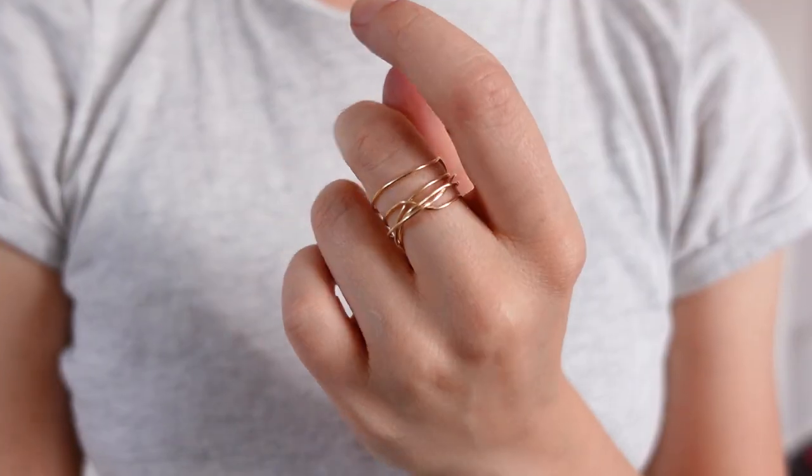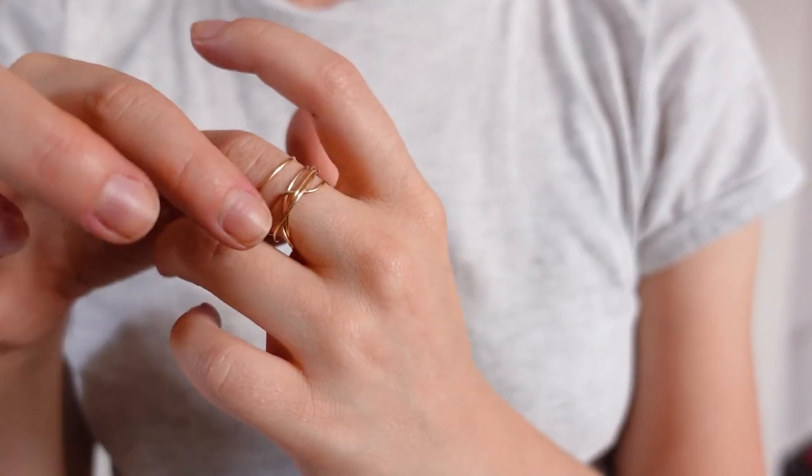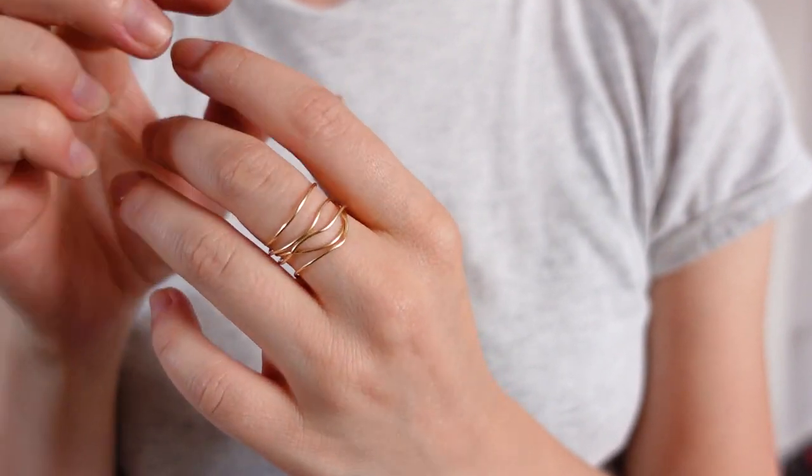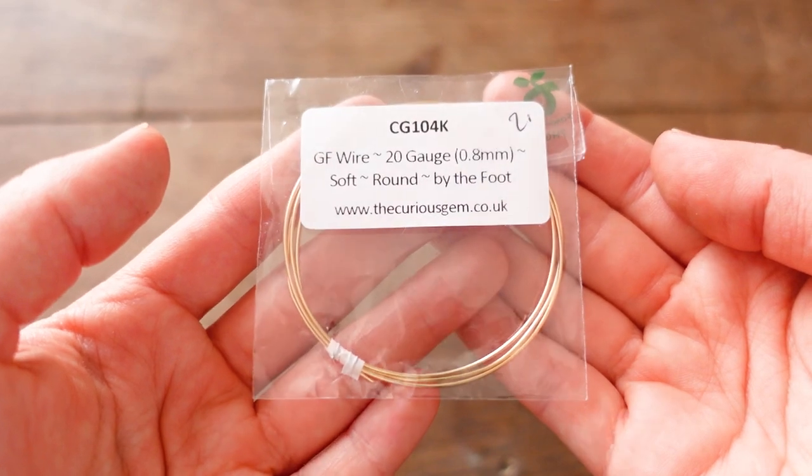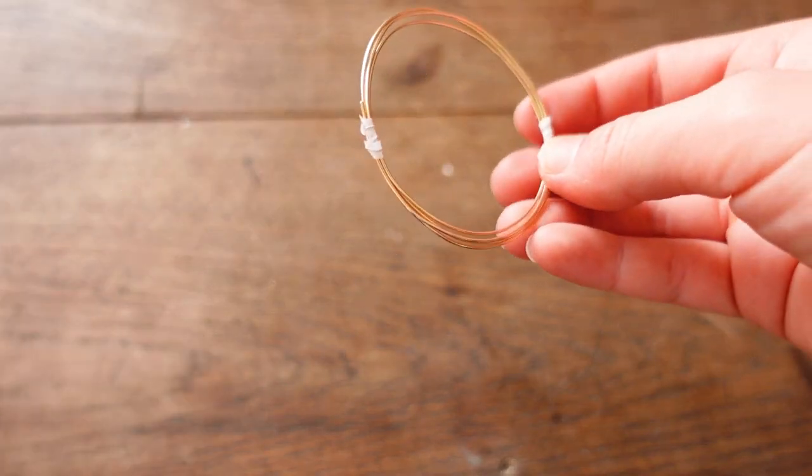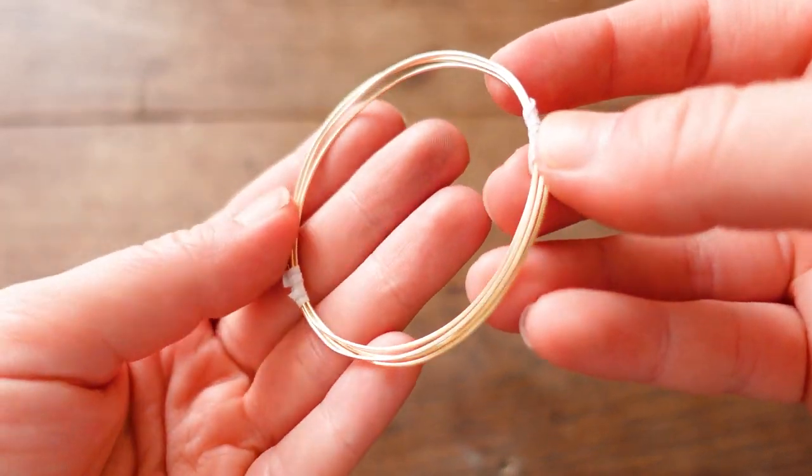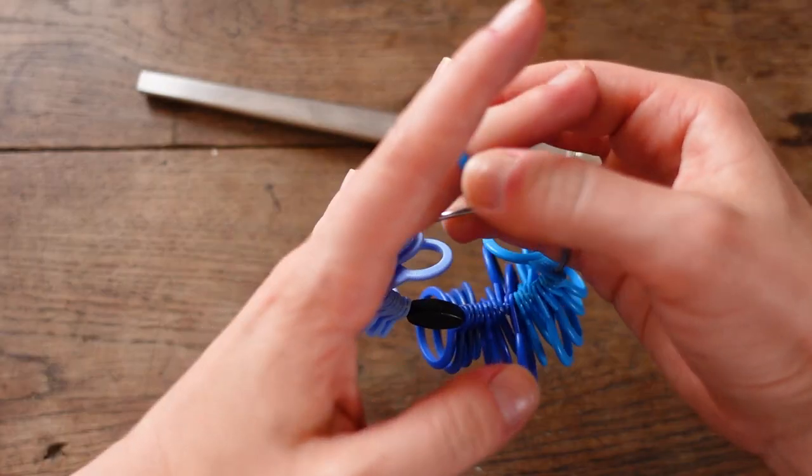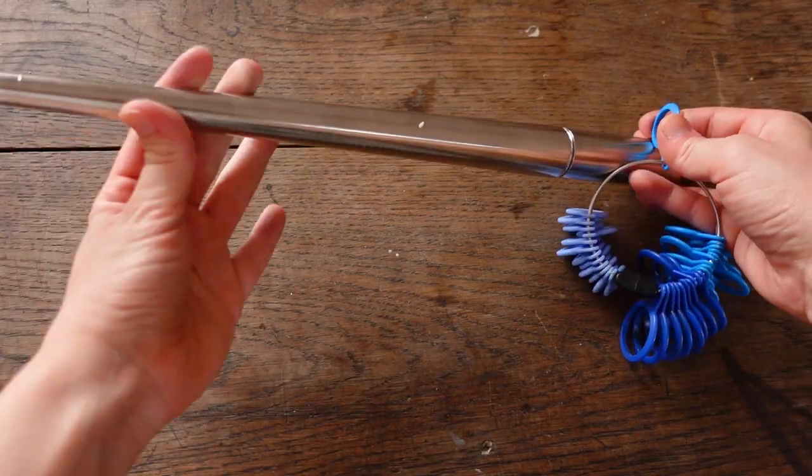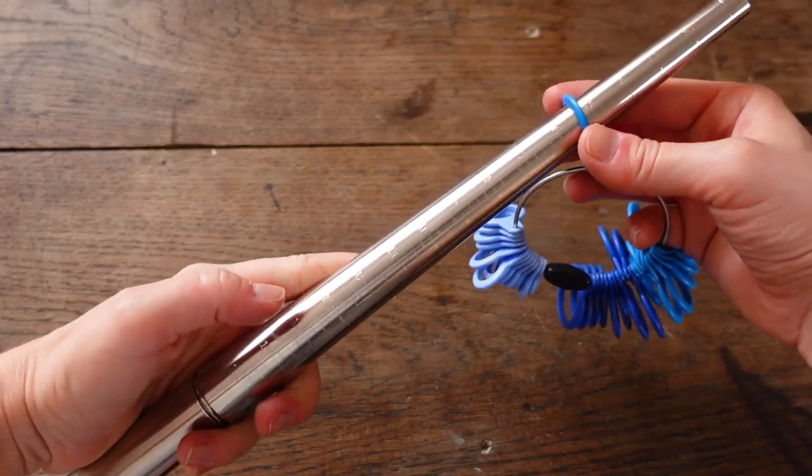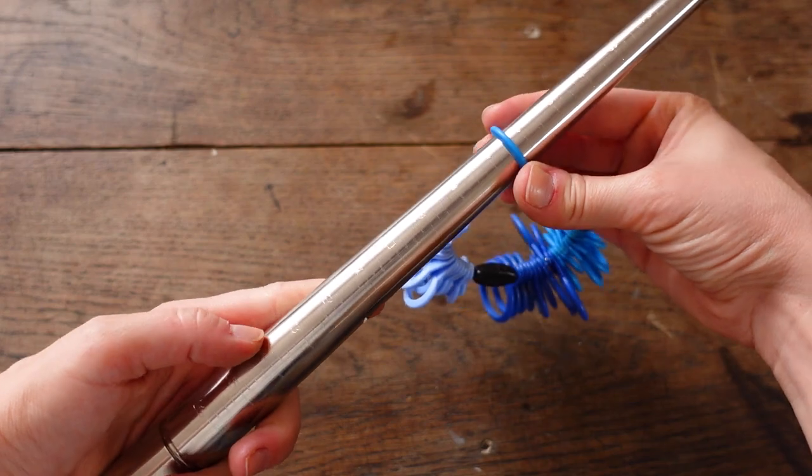For our next project we will make an organic looking wrapped gold-filled ring using soft 20 gauge gold-filled wire. First, check what's your size using a ring sizer. Then double check it with the mandrel to make sure it's correct and aligns.